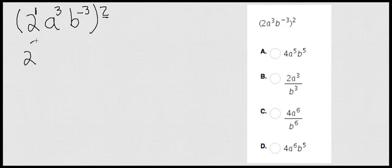I'm going to have 1 times 2, and that's going to be 2. 3 times 2 is going to be 6. Negative 3 times 2 is actually going to be negative 6.